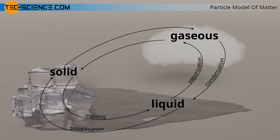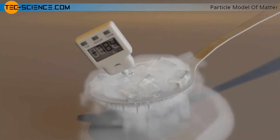Finally, there is another change of state which leads directly from the solid to the gaseous state. This process is called sublimation, and the reverse process from the gaseous state directly to the solid state is called deposition. Sublimation processes are known, for example, from dry ice. Dry ice is basically carbon dioxide in a frozen state, which changes directly from the solid state to the gaseous state at around minus 78 degrees Celsius without liquefying. The fact that carbon dioxide does not melt is the reason why it is called dry ice.